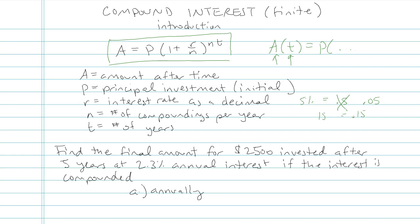And then N stands for the number of times the interest is compounded per year. And T is the number of years. How long do you leave the money in the bank? So we're going to try some, hopefully, pretty straightforward problems.